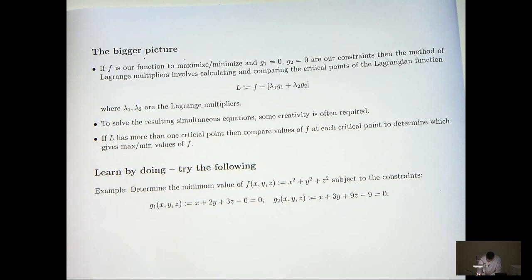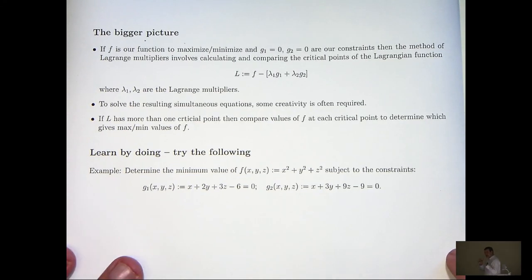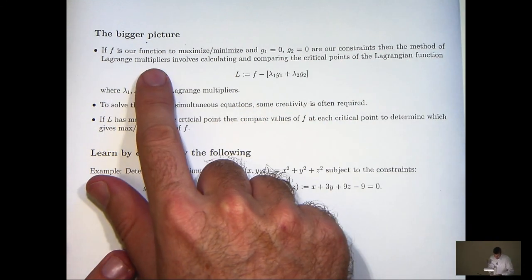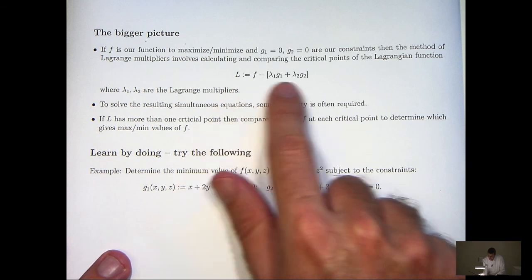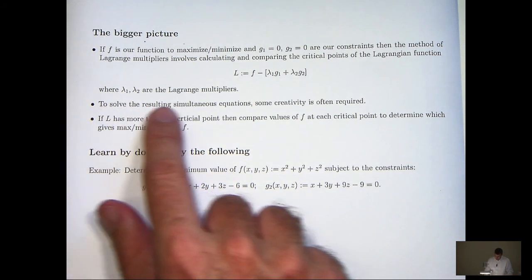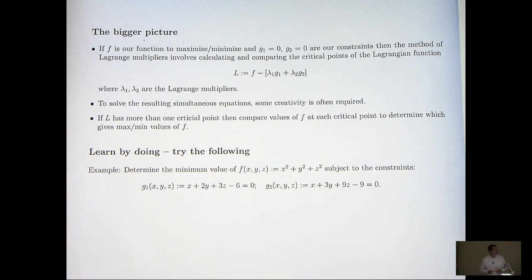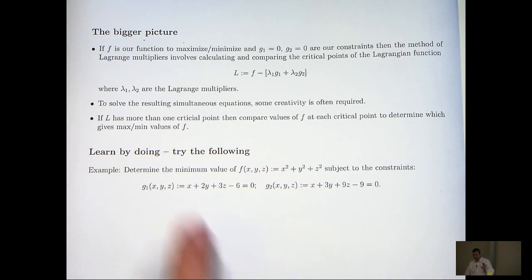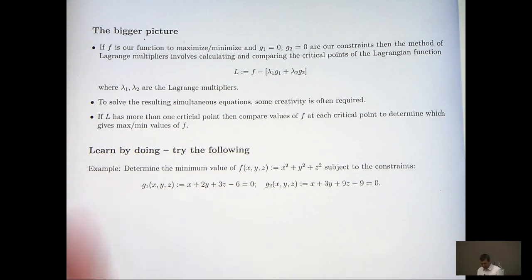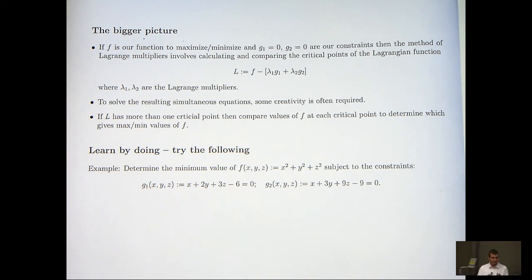Let's look at the bigger picture — what are some techniques or ideas you can use in all sorts of problems? If f is our function to maximise or minimise and we have two constraints, then the method of Lagrange multipliers involves calculating the critical points of the Lagrangian function, where λ1 and λ2 are the Lagrange multipliers. To solve the resulting simultaneous equations, some creativity is often required. In this example we had five equations and five unknowns. If L has more than one critical point, you compare the values of f at each critical point to determine which gives the max or min. In our example there was only one critical point.